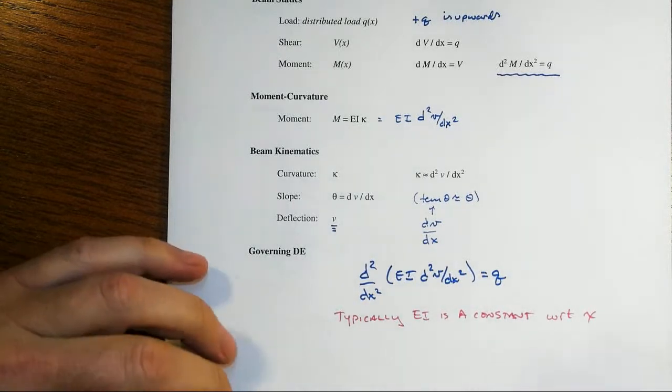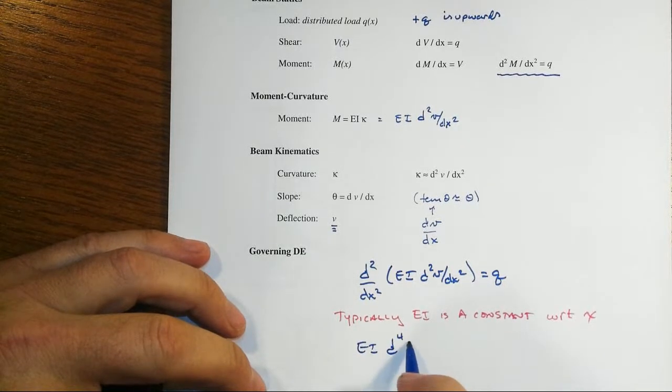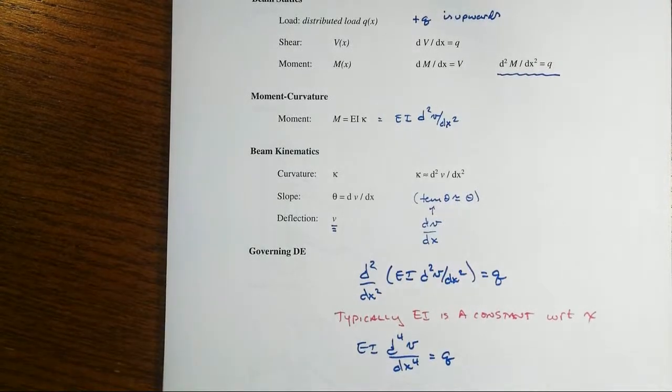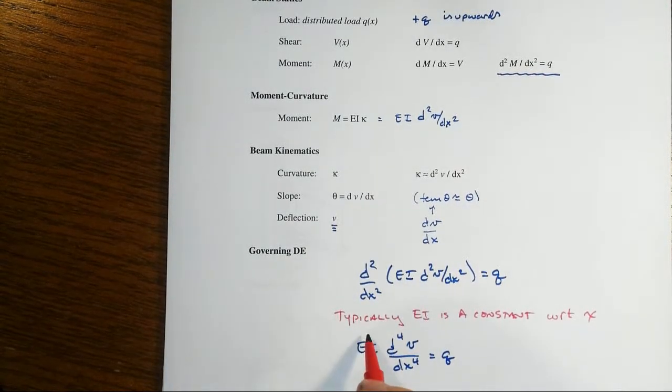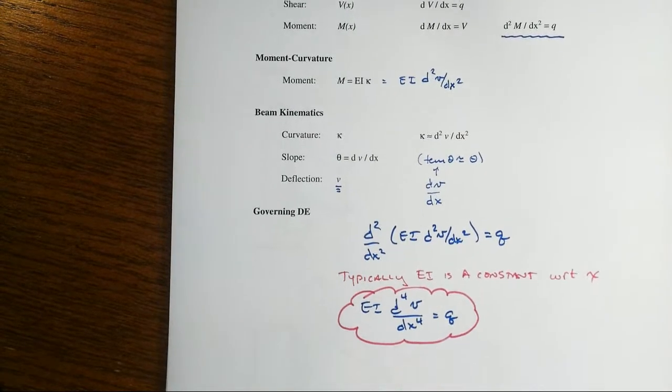You don't have to use the chain rule anymore. We've got EI times then the fourth derivative of our deflection is equal to our load. And that then becomes our governing differential equation for beam deflections.